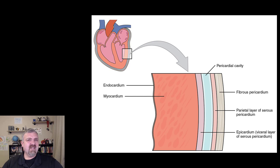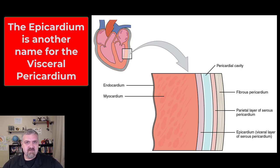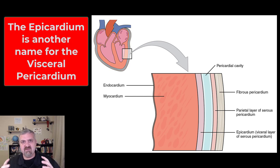Okay, the layers. Let's start on the outside and work our way in. First we have the fibrous pericardium — that's the tough fibrous pericardial sac around the heart that keeps the heart stabilized and hopefully protected.